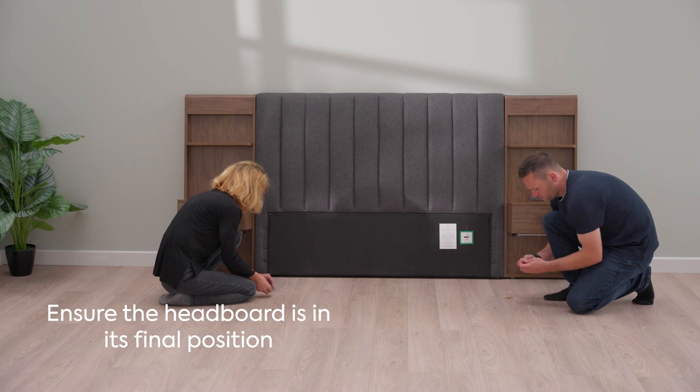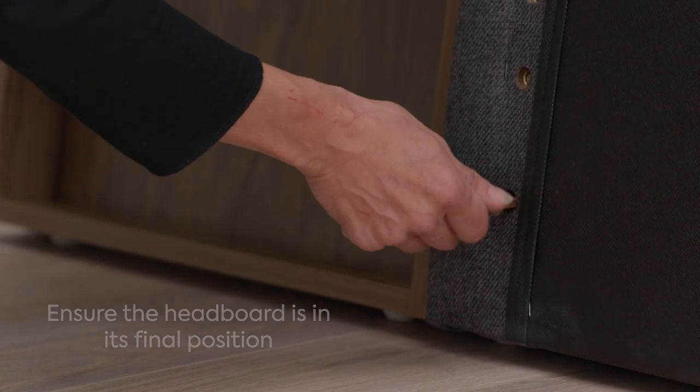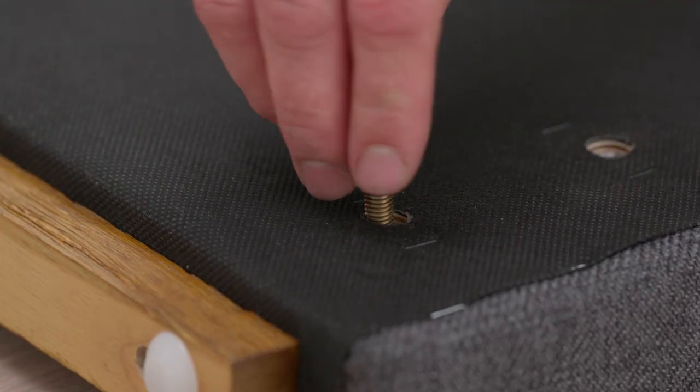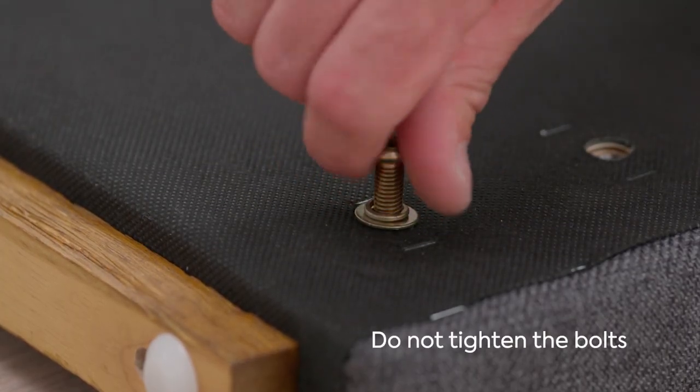With the headboard in its final position, we can now fit the side rails and footboard. Attach bolt assemblies to the top and bottom holes on both the headboard and footboard.